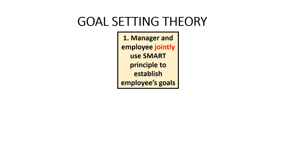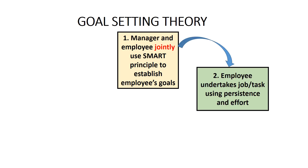The first stage in the cycle is that the manager and the employee jointly establish goals for the employee that comply with the SMART principle, which we'll come back to on the next slide. It is critical that the employee's goals are aligned — that is, consistent with the business's objectives — because we want the employee to contribute to the achievement of the business objectives by meeting their individual goals. The second stage is that the employee uses persistence and effort to try to achieve each goal. Because the goals have been set jointly by the manager and the employee, the employee is highly motivated to achieve them, having accepted responsibility by being involved in setting the goals in the first place.